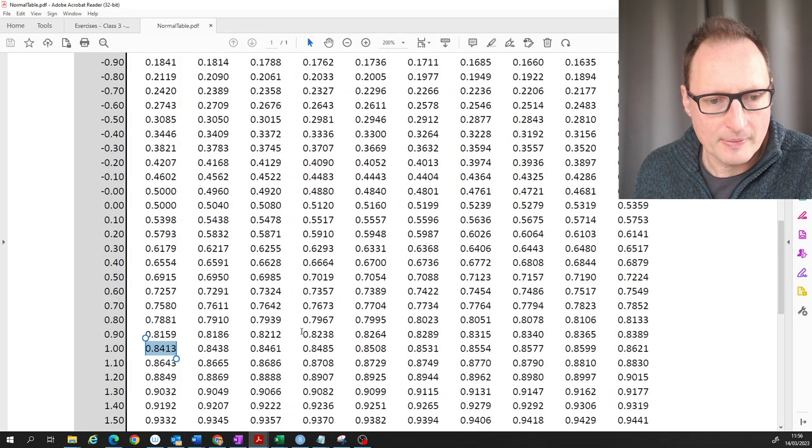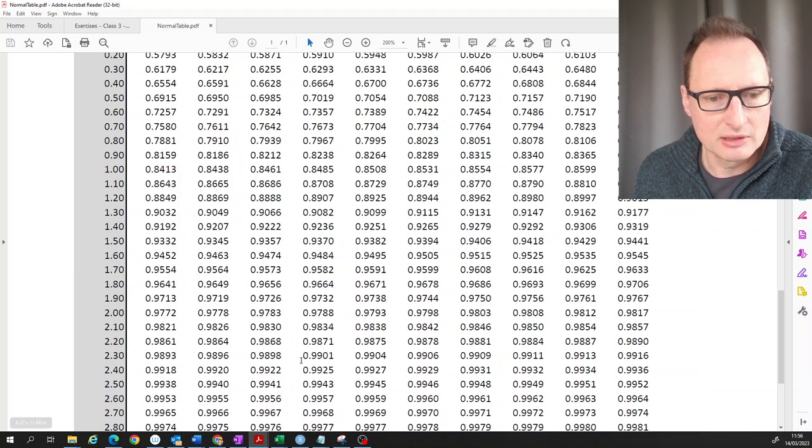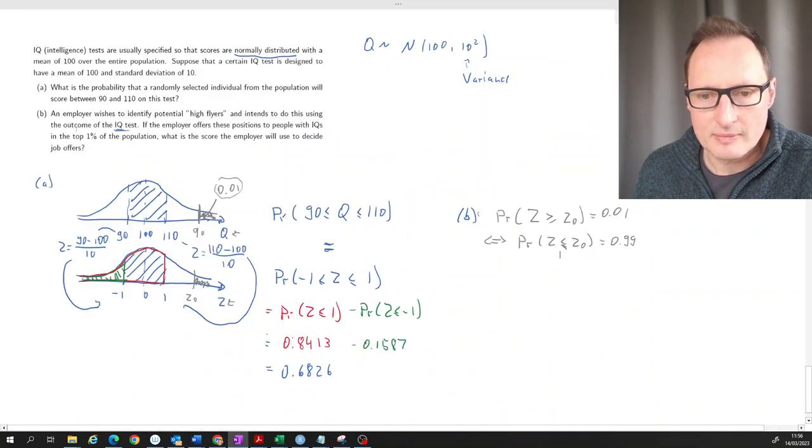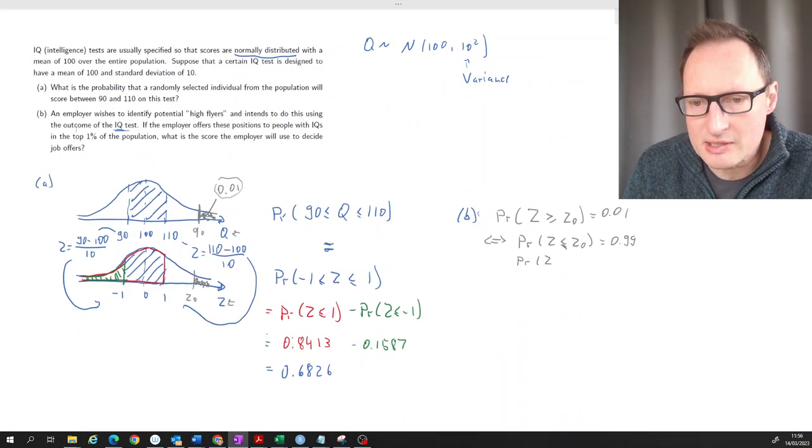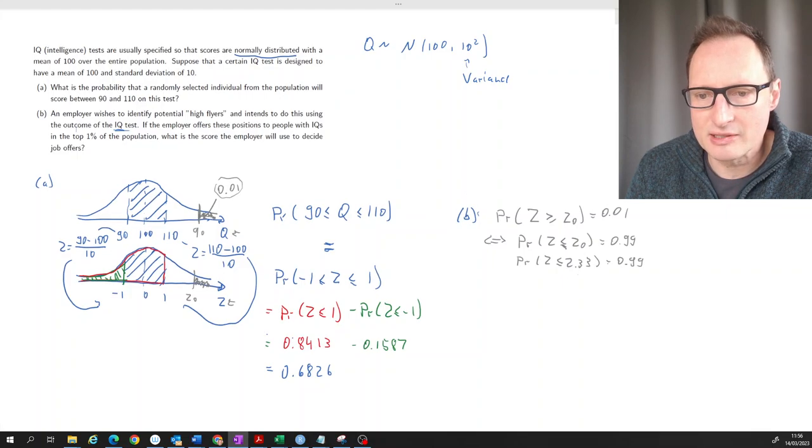So let's do that. Go to the table. Find 0.99. So this is down here. This is the value closest to 0.99, 0.9901. So it's 2.33. So the probability that Z is smaller or equal to 2.33 is equal to 0.99. So now we've got to translate that into the Q world.